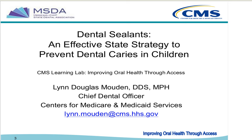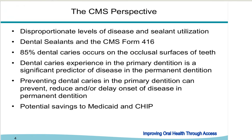We know there are disproportionate levels of disease and sealant utilization in the Medicaid population. According to the GAO report from NHANES studies from 1988 to 2004, caries rates for patients ages 2 to 18 have gone from 55 to 61 percent for Medicaid patients, while private insurance patients went from 50 to 45 percent. For young children ages 2 to 5, Medicaid caries rates rose from 32 to 39 percent, versus only 19 to 21 percent for private insurance.